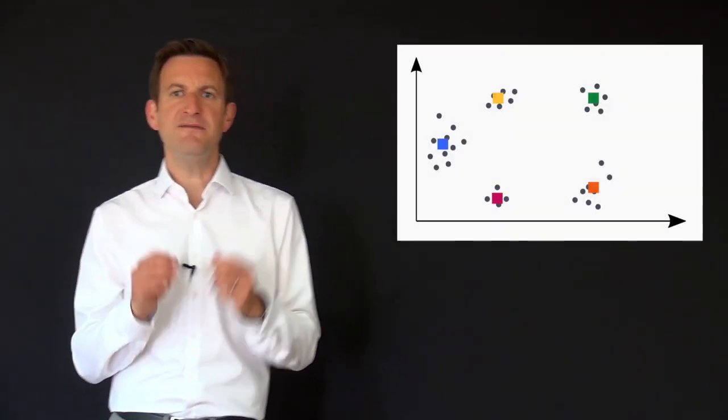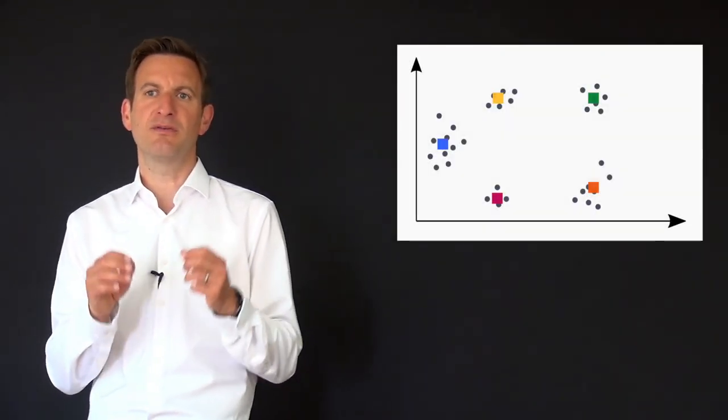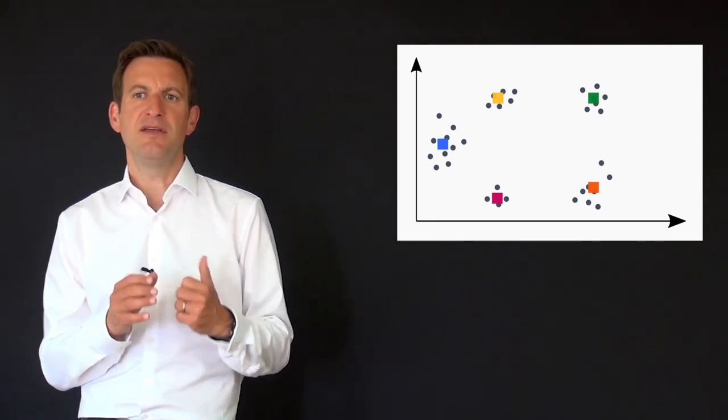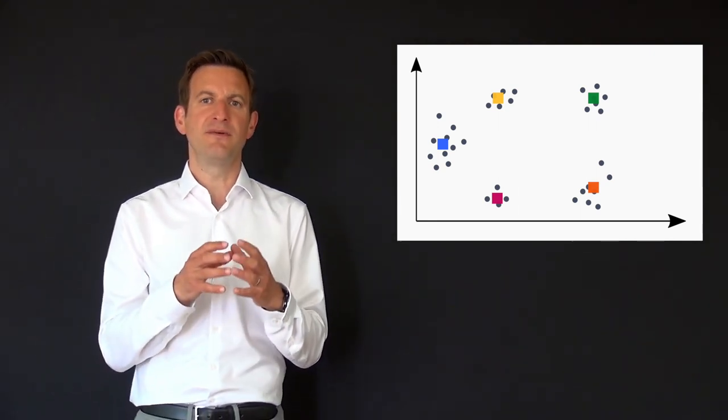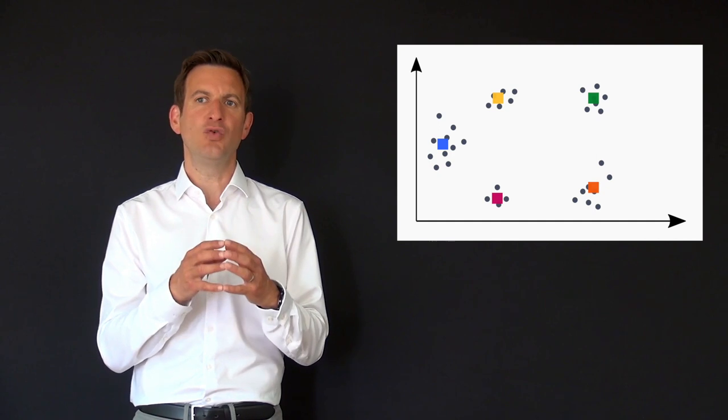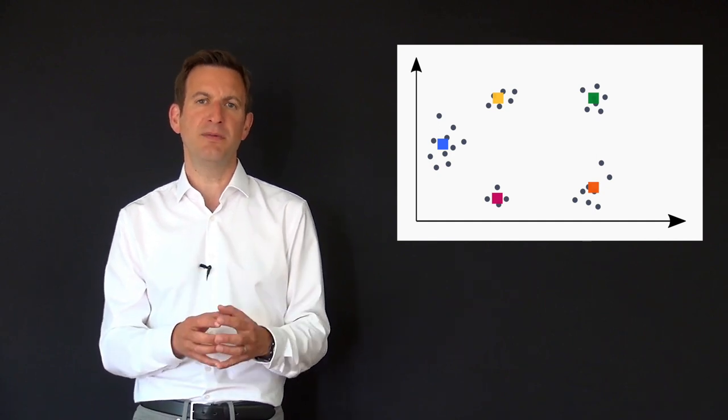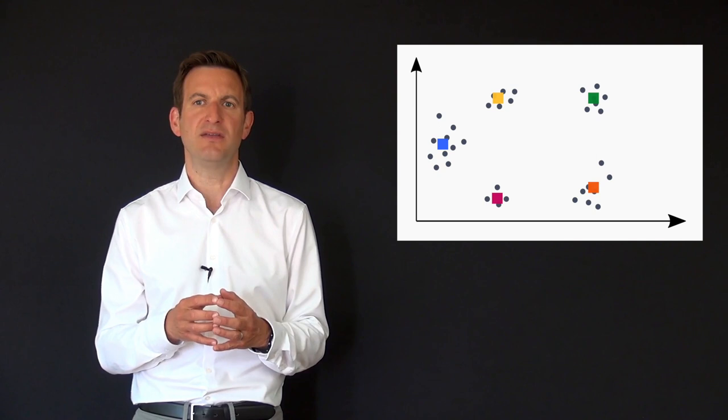A visual word can be a single feature. Most approaches, however, will use the mean feature descriptor computed from several similar descriptors as the visual word. That means we are grouping visual features together into one word and this grouping is typically computed using a clustering algorithm such as k-means.